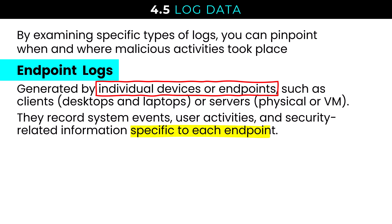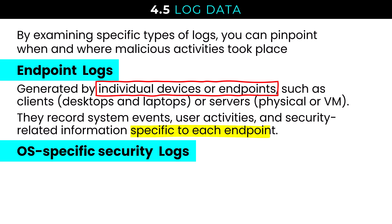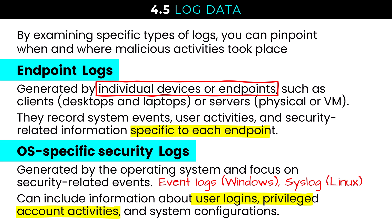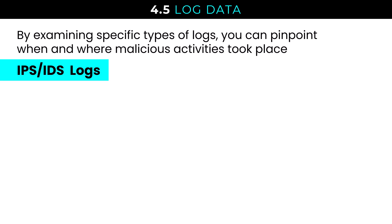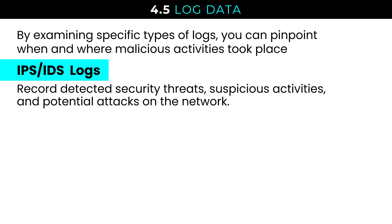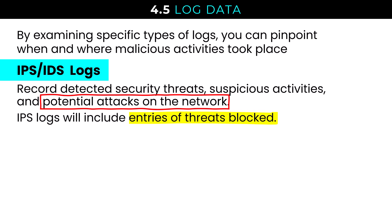You have OS-specific security logs generated by the operating system, focused narrowly on security-related events. That's the security event log on Windows and syslog on Linux. This can include information about user logins, privileged account activities, and system configurations. You also have intrusion prevention and intrusion detection systems — IPS and IDS — which record detected security threats, suspicious activities, and potential attacks on the network. IPS logs will include entries of the threats they block, while intrusion detection will log and potentially alert on a threat but not block it.